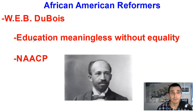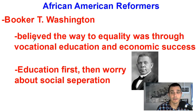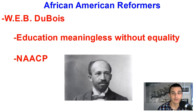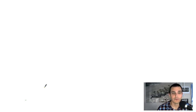Booker T. Washington had some famous back and forth with W.E.B. DuBois — they had different thoughts on how best to achieve equality for the African American community. Booker T. Washington thought equality was best achieved through education and economic success — worry about education first, then worry about segregation laws. W.E.B. DuBois thought kind of the opposite, and played a big role in founding the NAACP, an organization that seeks to advance the interests of Black people in the country. We'll talk more about these reformers in class, but that's going to do it for the Jim Crow era.